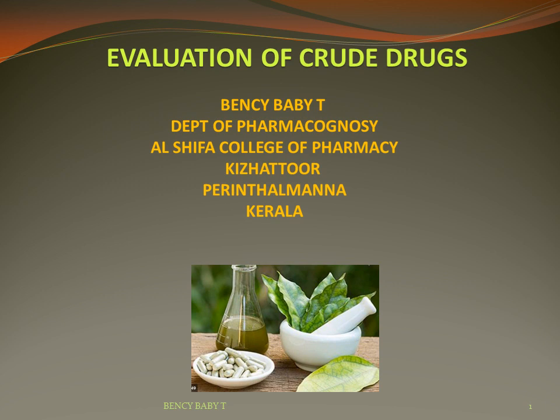Unorganized drugs are derived from different plant parts by extraction methods. Some of them are natural secretions, and some are obtained by incision. Examples are acacia, aloe, castor oil, asafoetida, etc.